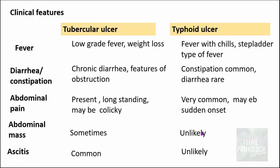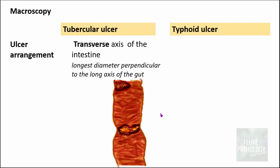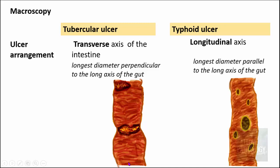Moving on to macroscopic differences between typhoid and tubercular ulcers: tubercular ulcers are usually situated in the transverse axis of the intestine — that is, the longest diameter of the ulcer is perpendicular to the long axis of the gut. Whereas in typhoid ulcers, the ulcers are arranged in the longitudinal axis, meaning the longest diameter runs parallel to the long axis of the gut.